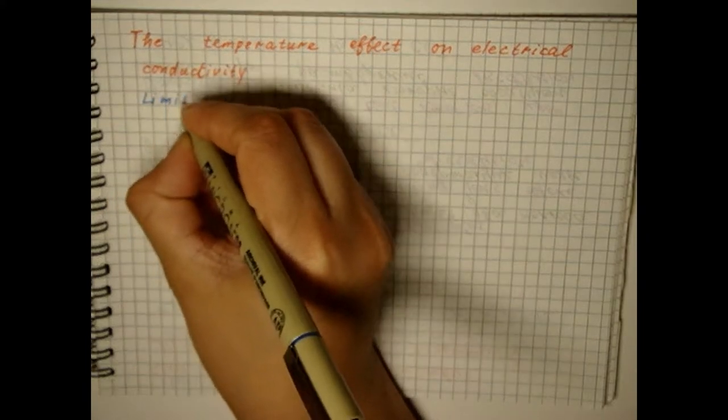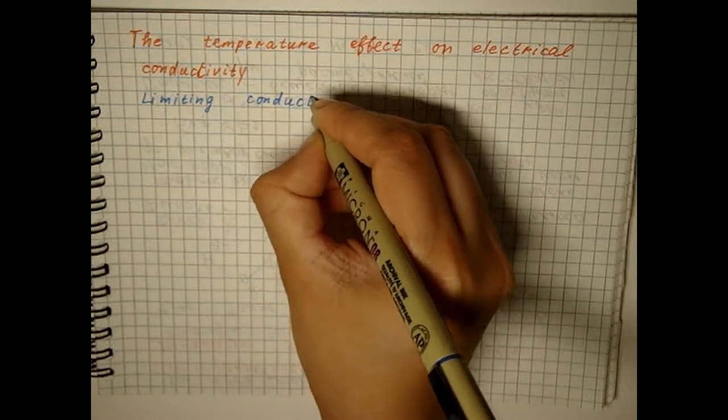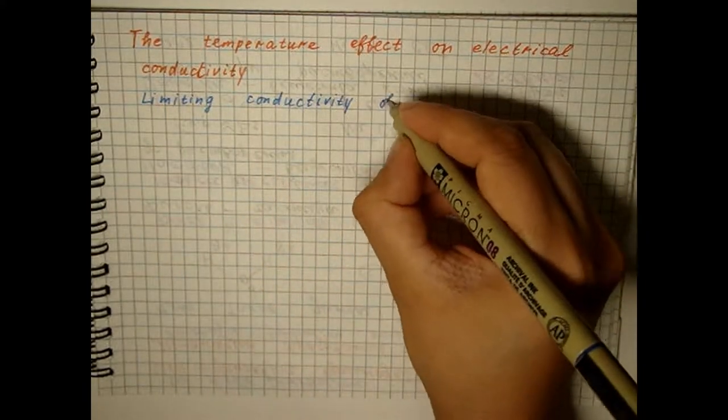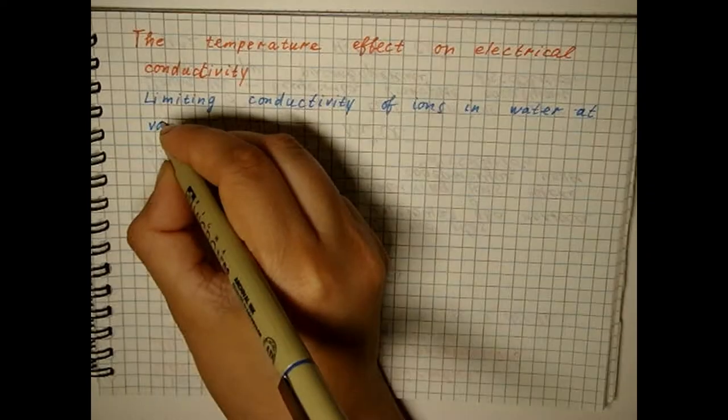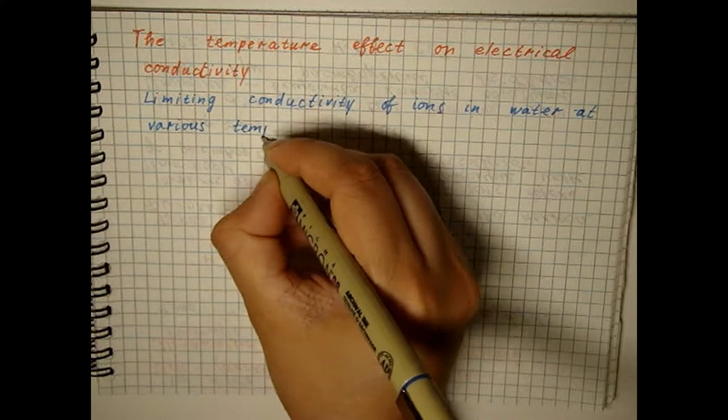The electrical conductivity of metals decreases with increasing temperature because the amplification of vibrations of positively charged ions of the metal lattice impedes the movement of the electrons.